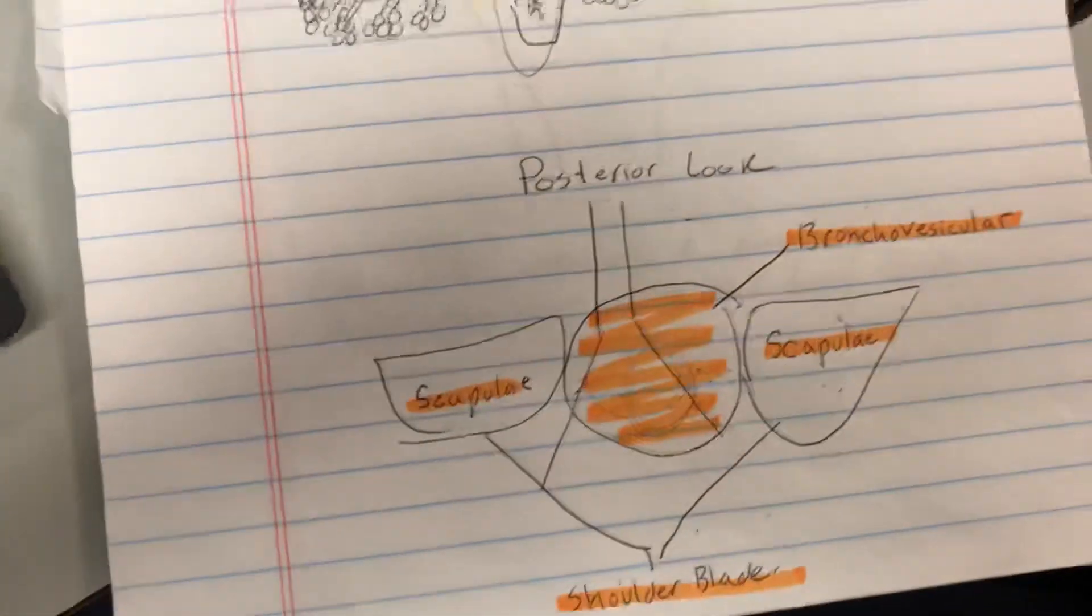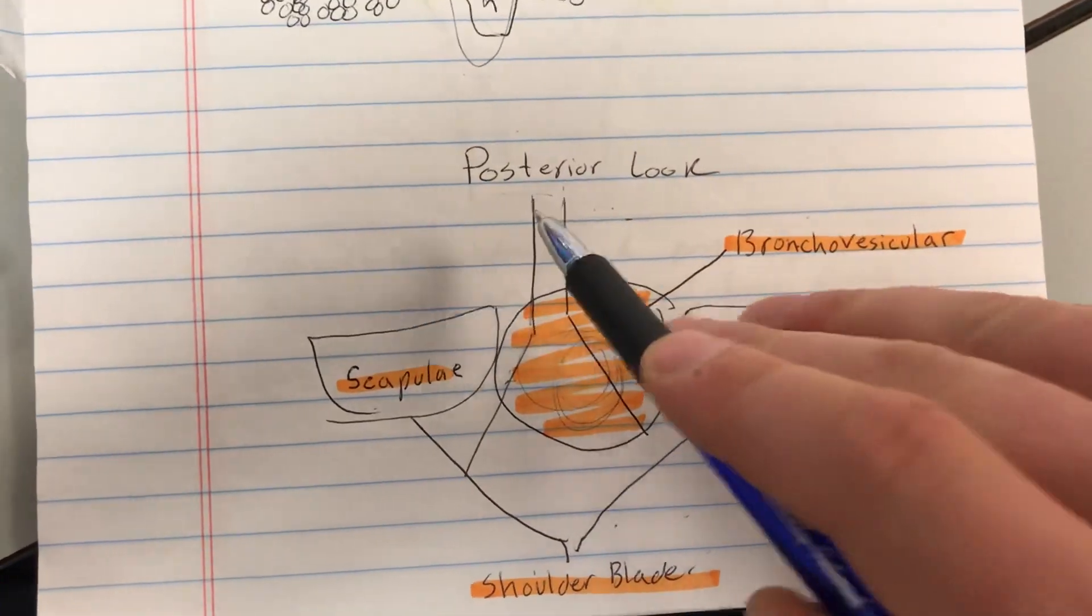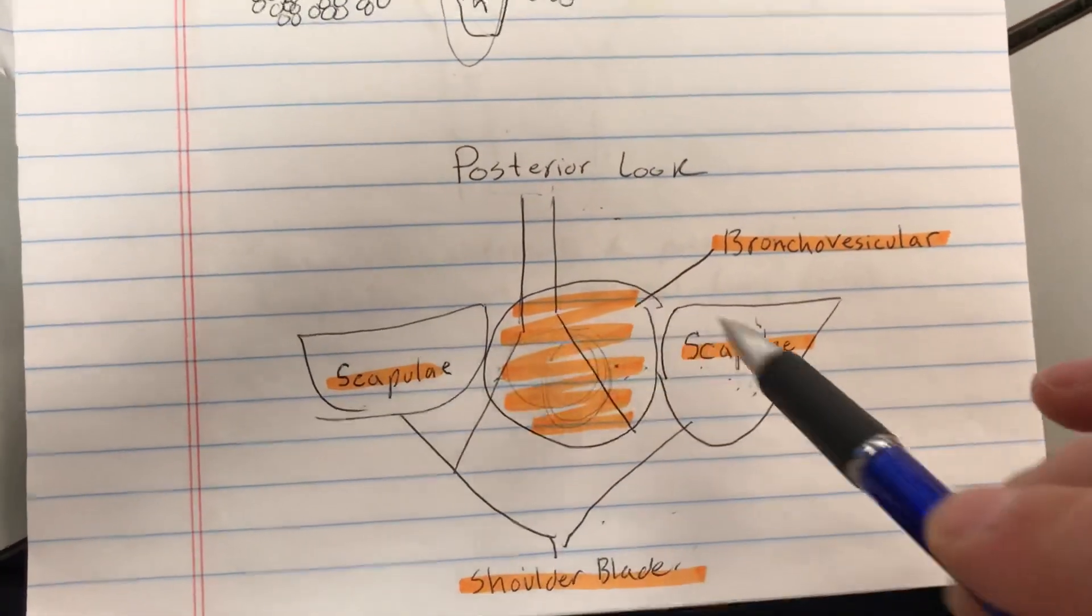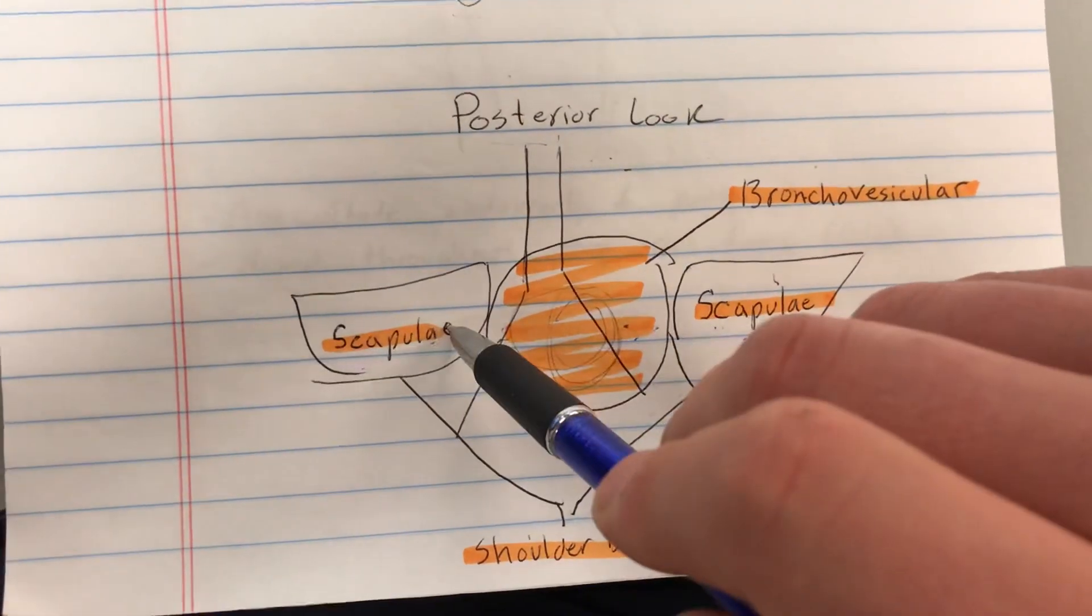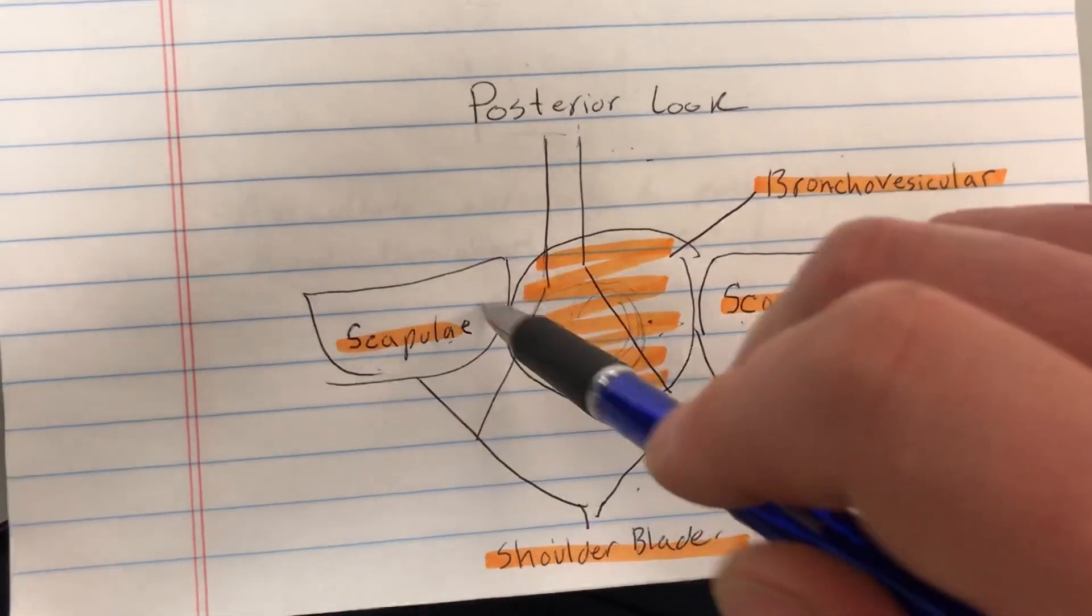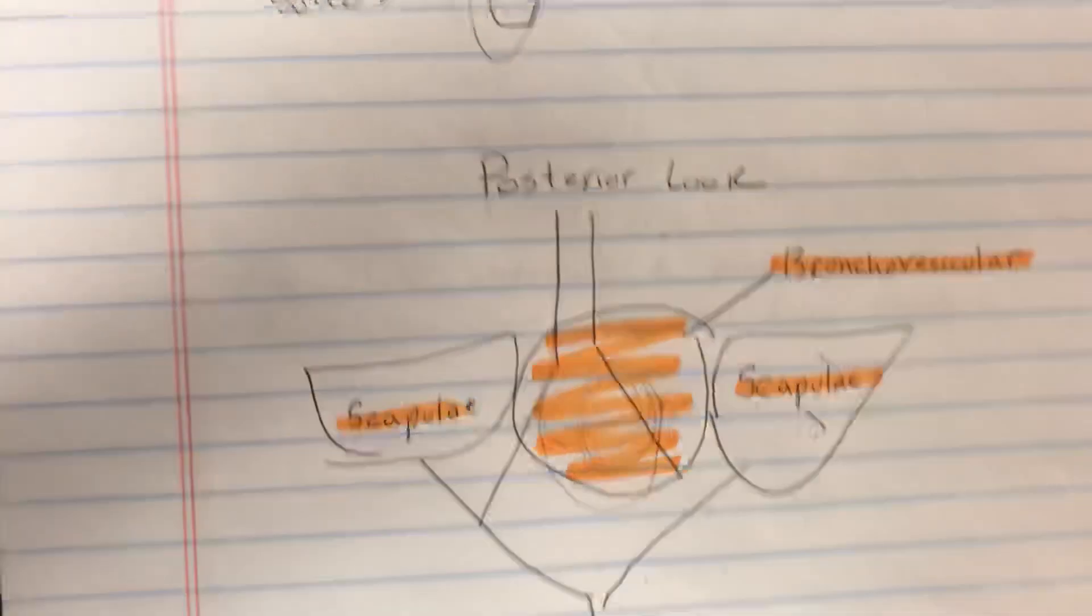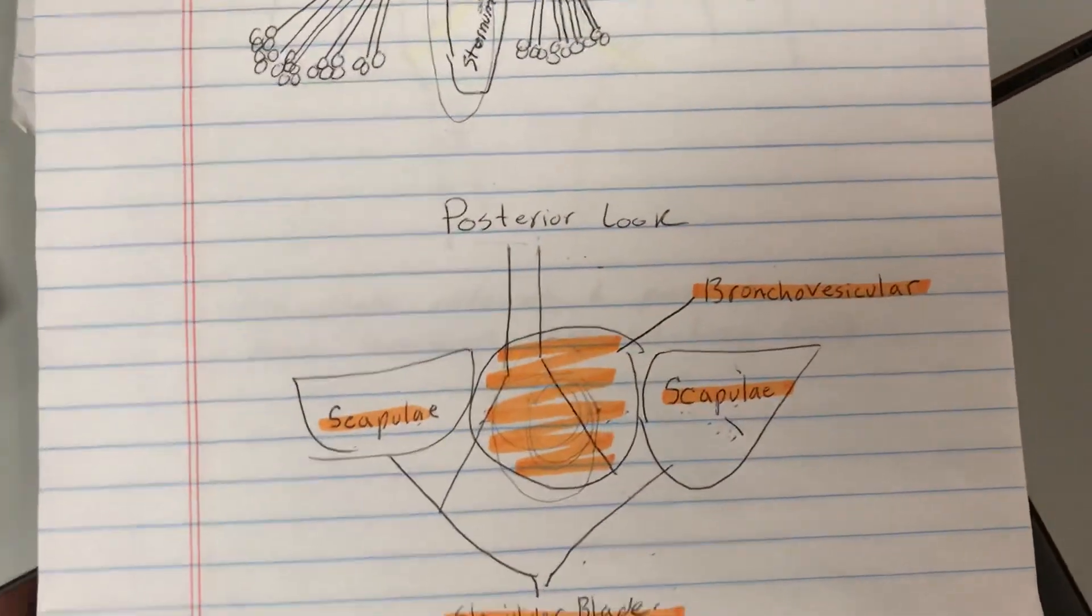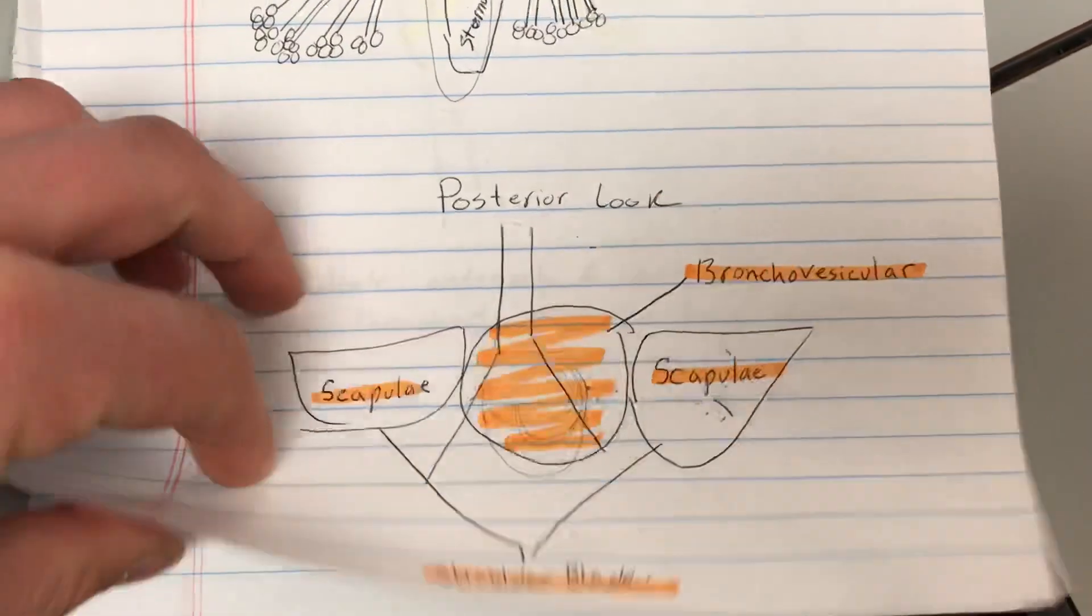Now, if we're taking the bronchovesicular lung sounds on the back of the body, the posterior part, posterior meaning back of the patient's body, we're going to auscultate between the scapulas. So in layman's terms, in case you're not sure what the scapula is, it's the shoulder blade. Between the shoulder blades in this region, that is where we hear for lung sounds whenever we're checking for bronchovesicular lung sounds. That's just the location.